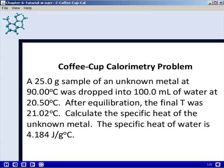After equilibration, the final temperature of the mixture is 21.02 degrees Celsius, and we're asked to calculate the specific heat of the unknown metal, given that the specific heat of water is 4.184 joules per gram per degree Celsius.